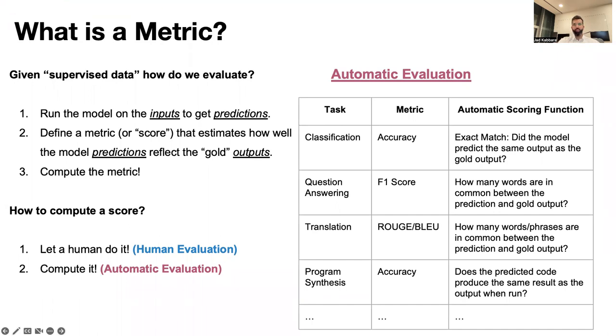In translation, for example, commonly used metrics are ROUGE and BLEU, and these assess how many words are in common between the prediction of the model and the gold output.